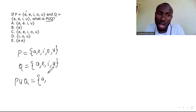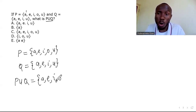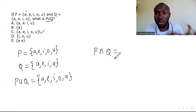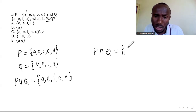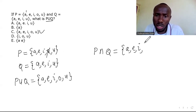When joining the two sets, if both sets share an element like 'a', you write it only once. Both have e — write one e. Both have i — write one i. P has o but Q does not, so include o. Both have u. So P union Q is {a, e, i, o, u}. For P intersection Q — what they have in common — both have a, e, i, and u, but not o, so P intersection Q is {a, e, i, u}. That's just for your knowledge.